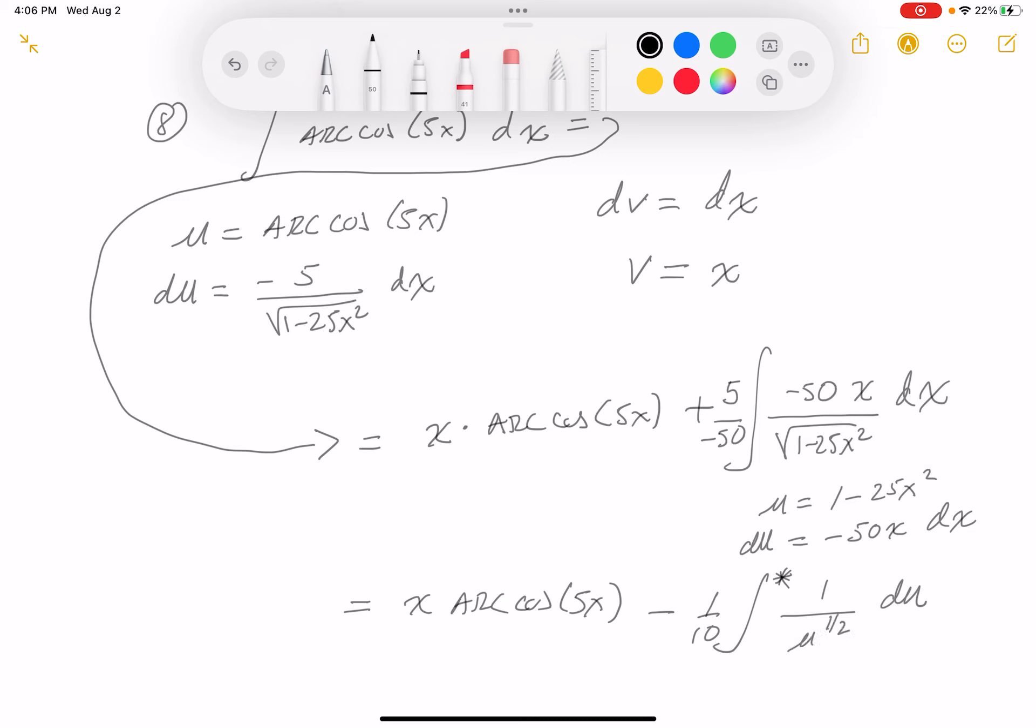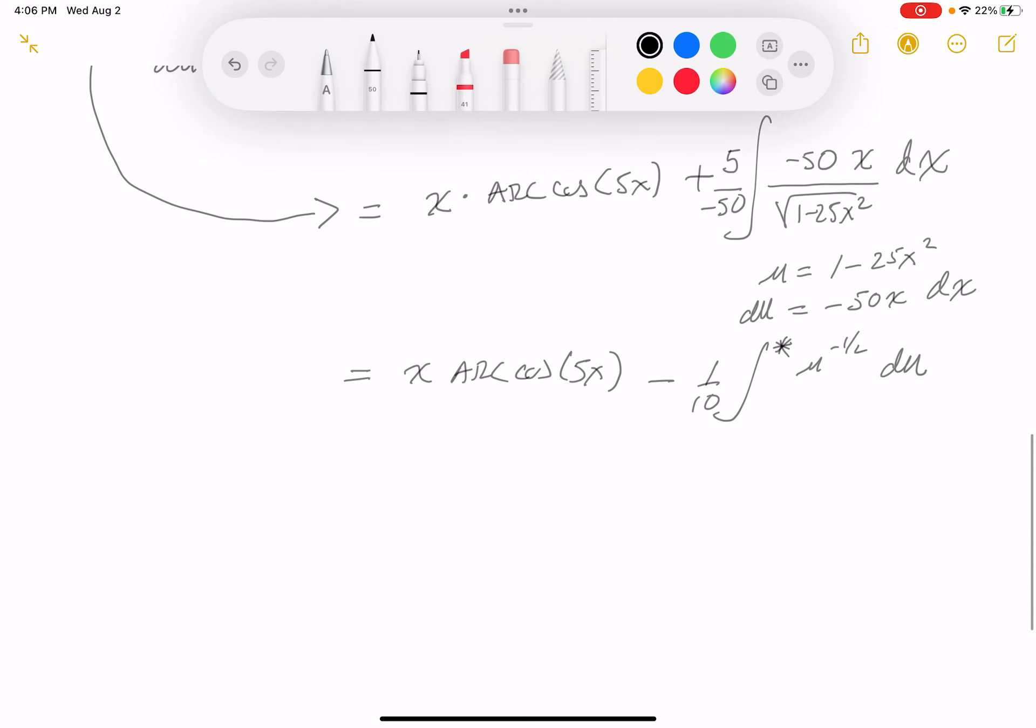Well, 1 over u to the 1 half power, I'm going to erase that. It's really u to the minus 1 half. Can I integrate that guy? Yes. And what do you get? x arc cosine 5x minus 1 tenth.